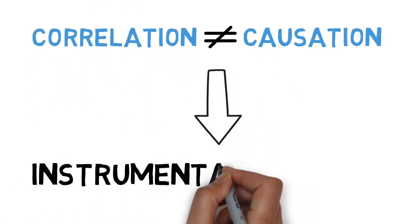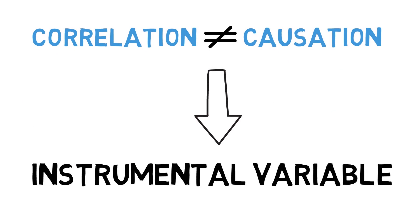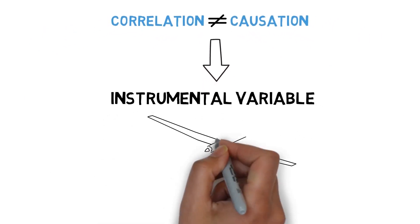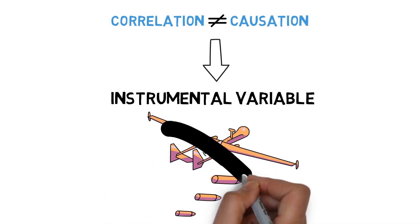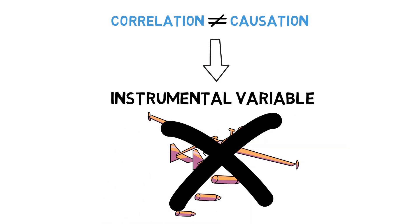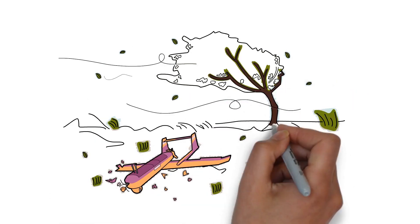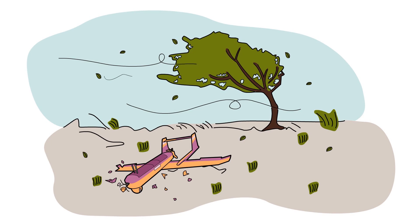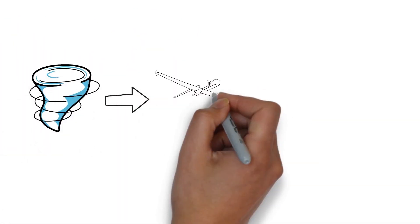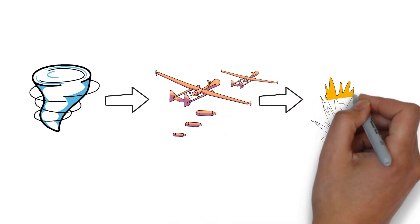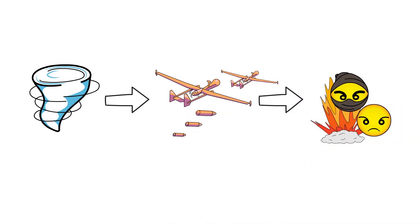We employ an instrumental variable approach to solve that empirical problem by looking at days when drones cannot strike because of reasons that are completely unrelated to terror attacks and the fight against terror. Specifically, if there is a lot of wind, drones are less likely to fly and hit their targets. We then test if terror attacks and anti-U.S. sentiment as well as radicalization in the local population change after days when drones do not strike because of strong winds.